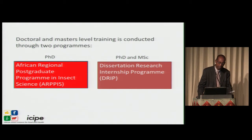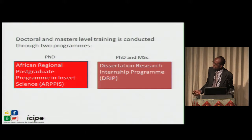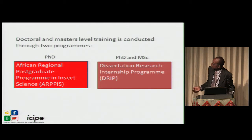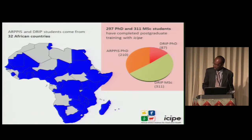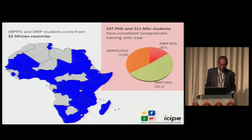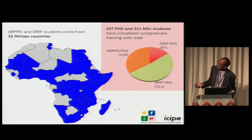We organize our doctoral program under two main categories. We have the African Regional Postgraduate Program in Insect Science — APIS — which has students in residence at ICIPE most of the time. We also have the Dissertation Research Internship Program — DRIP — where students from another institution, for example Cambridge, can come to ICIPE for a period of three to six months, which is beneficial to both them and our students. We have collaborations with at least 32 universities and several degree-awarding institutions across Africa. Over the life of APIS and DRIP, we've had almost 300 PhDs and a similar number of MSc students.